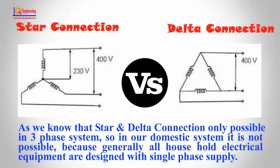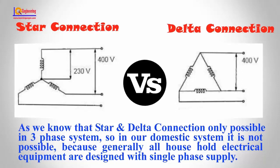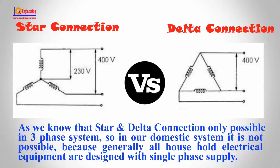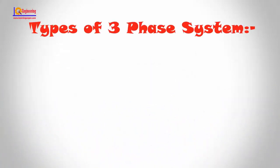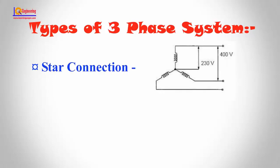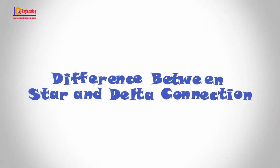Star and delta connections are only possible in a three-phase system, so in our domestic system it is not possible, because generally all household electrical equipment are designed with single-phase supply. In a three-phase circuit, there are two types of connection: one is known as star connection and the other one is delta connection.